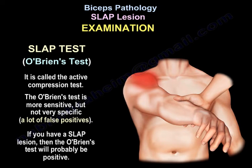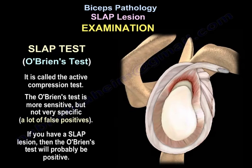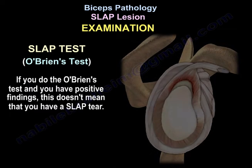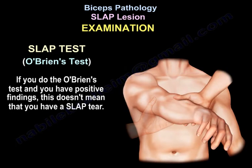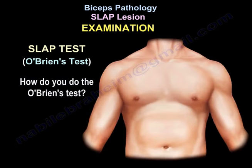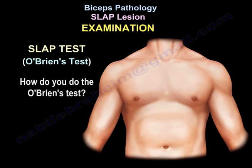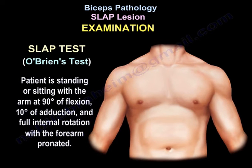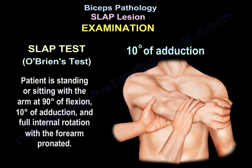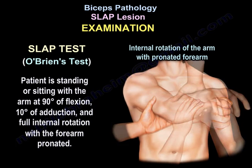So if you have a SLAP lesion, the O'Brien test will probably be positive. But if you do the O'Brien test and find it positive, it doesn't mean you have a SLAP tear. The patient is standing or sitting upright with the arm at 90 degrees of flexion and 10 degrees of adduction and full internal rotation with the forearm pronated.